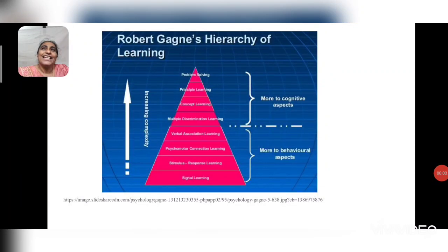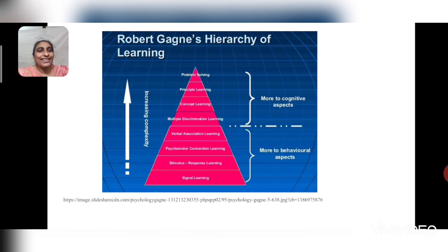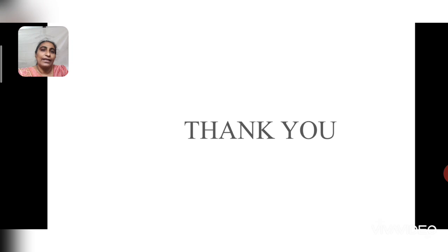Today we have learned Gagne's Hierarchy of Learning. There are 8 levels: signal learning, stimulus response learning, chaining (motor and verbal), verbal association, multiple discrimination, concept learning, principle or rule learning, and problem solving. Relate this with your subject — that is your assignment. See how these levels can be incorporated. Thank you and have a good day.